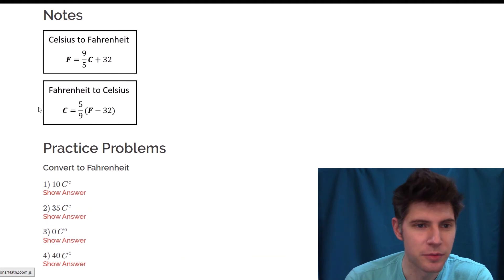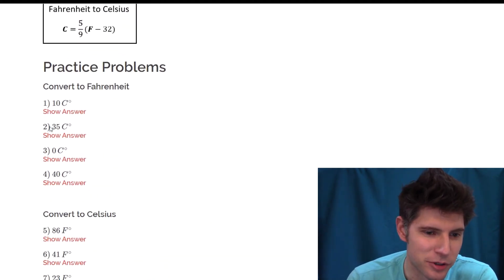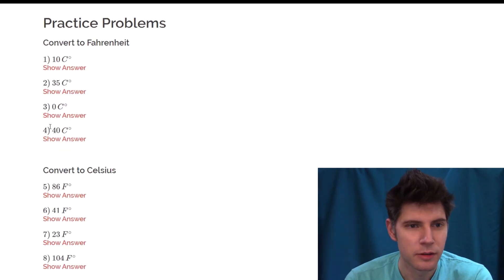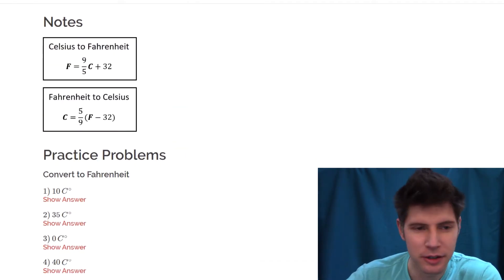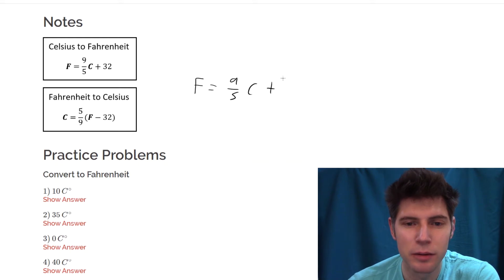There are the notes to go from Celsius to Fahrenheit or Fahrenheit to Celsius. We'll do one of each. For number one, convert to Fahrenheit. So if we're going to convert to Fahrenheit, we're going to use this first formula: F equals nine-fifths C plus 32.